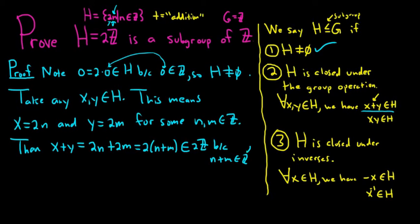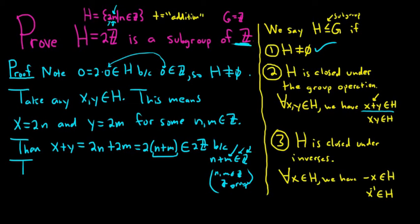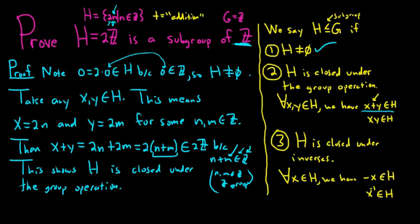This is because n plus m is in Z — and why is that? Because Z is a group and it is closed under its group operation. So n and m are in Z, Z is a group, therefore n plus m is also in Z. This shows h is closed under the group operation. H is closed under the group operation because g is: n and m are in g, and it's a group, therefore the sum is also in g.